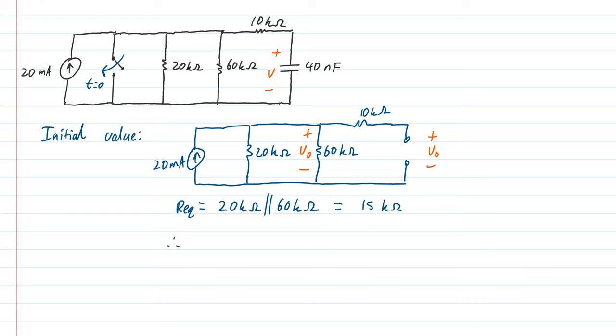Therefore by Ohm's law, our initial voltage is our resistance, that's 15,000, multiplied by our current, which is 0.02. And that is 300 volts.